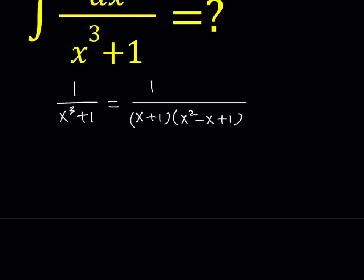Now, what I'd like to do is separate these into two fractions — write it as a sum of two fractions. We have to pay attention to the factors in the denominator: we have a linear factor and a quadratic factor. The quadratic factor is not factorable; it has no real solutions, its discriminant is less than 0. So we're not going to factor it — we'll leave it as is.